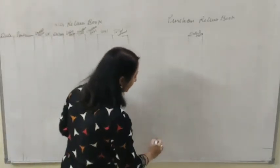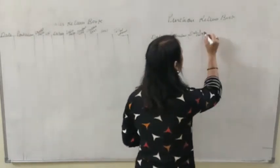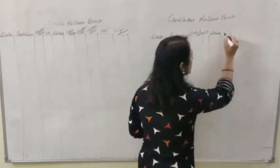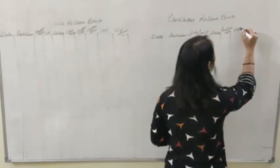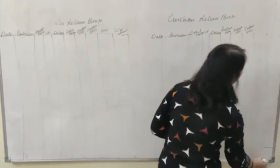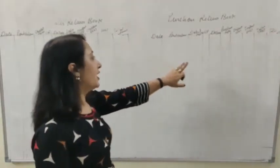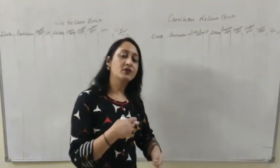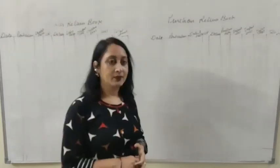For the purchase return book, we prepare a debit note when we return goods to the supplier. The debit note contains the amount, details, quantity, name of the supplier. The purchase return book format has columns for date, particulars, ledger folio, details, purchase return amount, input CGST, input SGST, input IGST, and total amount. This is all about subsidiary books.